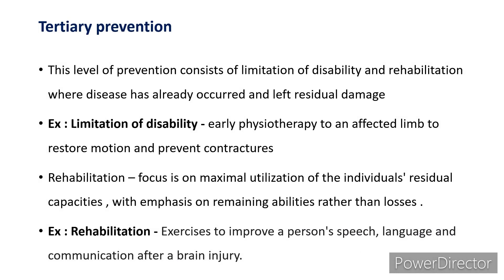Now coming to the last level of prevention — tertiary prevention. This level consists of limitation of disability and rehabilitation, applied where disease has already occurred and left residual damage. For limitation of disability, an example is early physiotherapy to an affected limb to restore motion and prevent contractures. Rehabilitation focuses on maximal utilization of the individual's residual capacities, with emphasis on remaining abilities rather than losses. For example, in a person with a history of brain injury, exercises to improve speech, language, and communication — we cannot reverse the injury, so we use residual capacities to improve function.